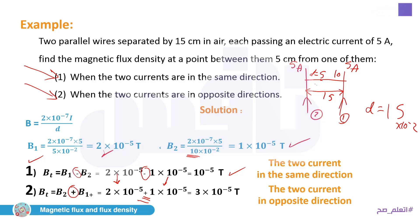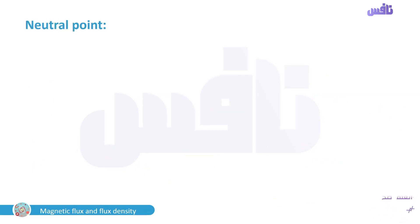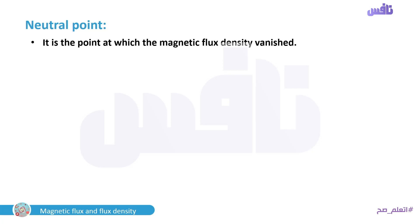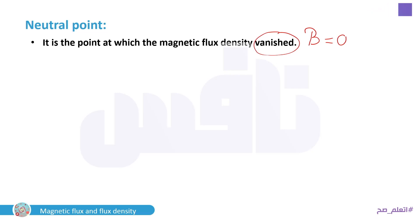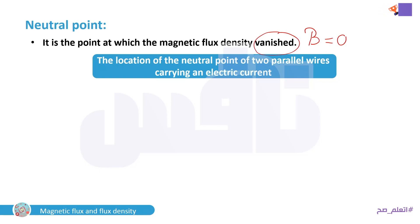There is a special case called the neutral point — the point at which the magnetic flux density vanishes (B = 0). For two parallel wires: if the currents are in the same direction, the neutral point is located between the two wires.